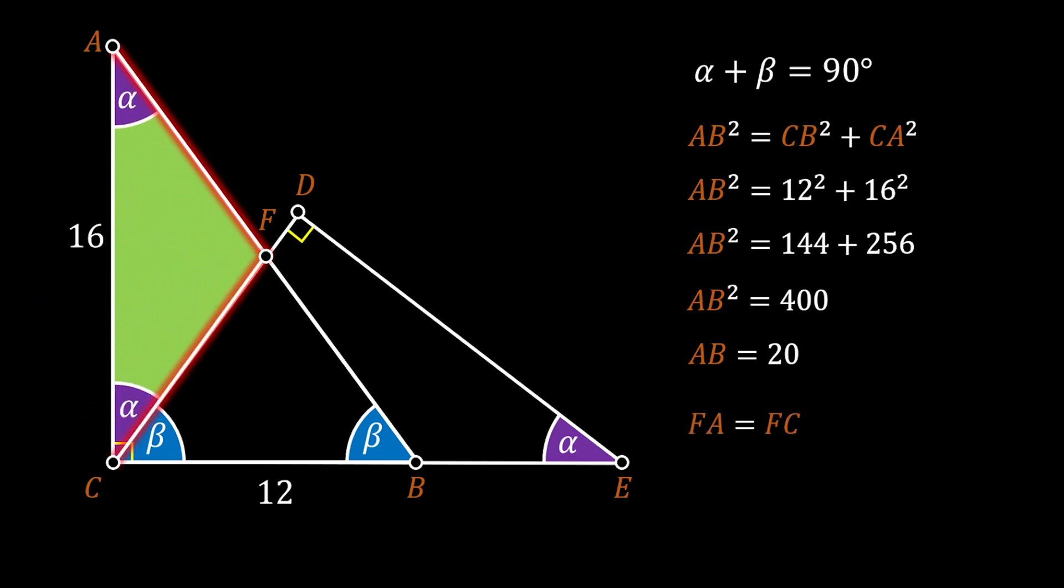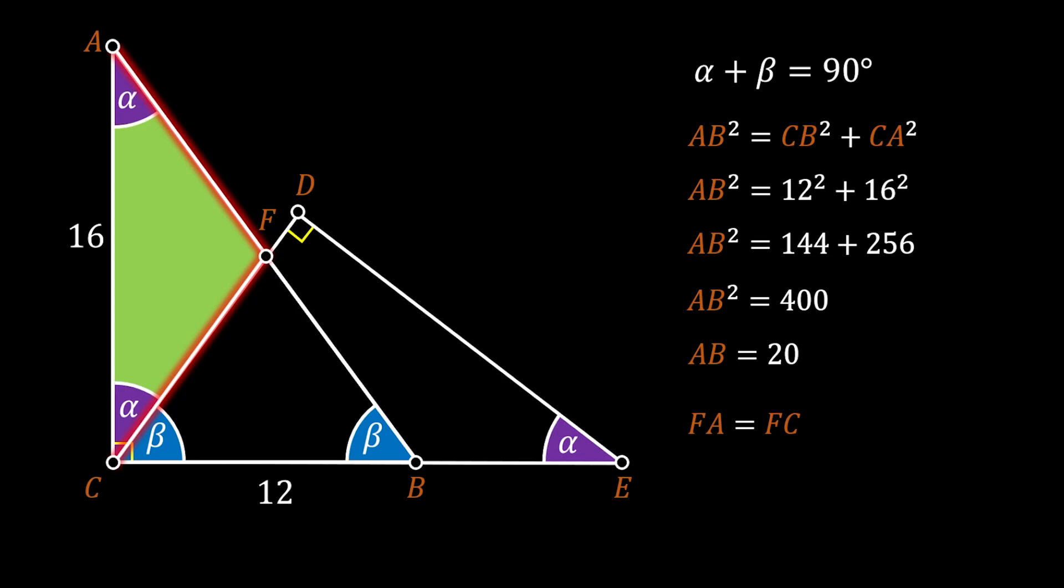Furthermore, we can conclude that the triangle CFB is also an isosceles triangle. That means that the line CF is equal to the line FB.